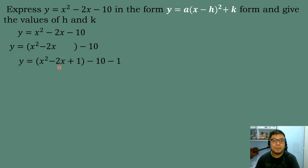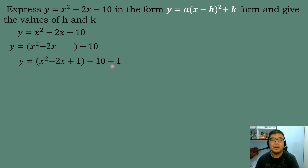So we put positive 1 in the blank: y = (x² − 2x + 1) minus 10. Then we add plus 1 inside and minus 1 outside, so that when we add the two numbers we added — positive 1 and negative 1 — they cancel out and equal zero.